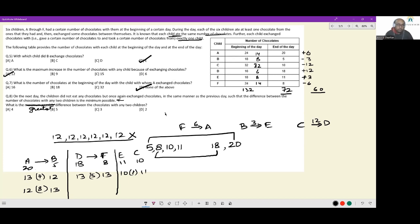And now if I'm looking at the greatest difference between the chocolates with any two children, see, the smallest possible value achieved by a child is 10. The greatest possible value achieved by a child is 13. So the greatest difference between the number of chocolates with any two children is going to be 3. And that is the entirety of this set.